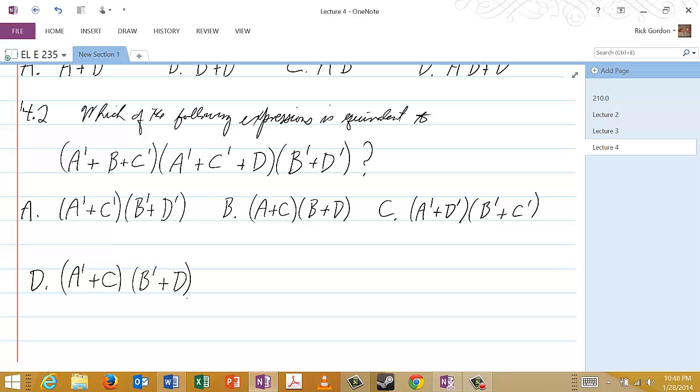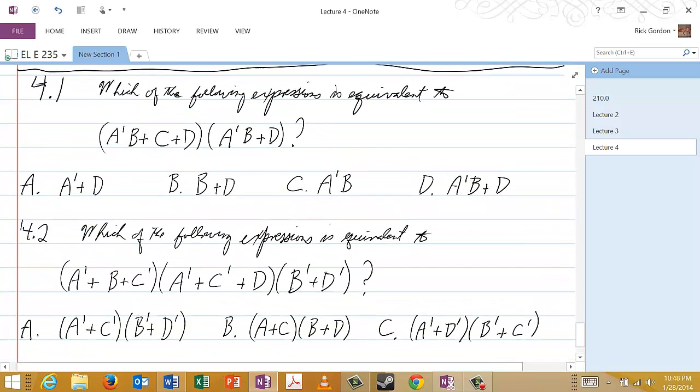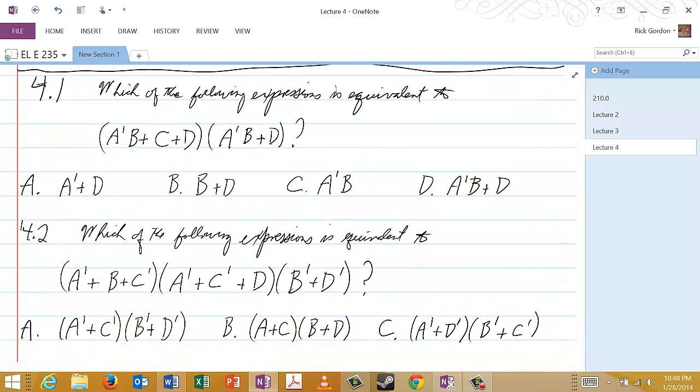So those are the two problems for lecture four, and one last hint I would like to give you is the following. You should try to solve these two problems through the process of simplification and using the theorems that we discussed in the lecture. However, if you get stuck, the hint is the following. Two expressions are equivalent if and only if they have the same truth table.